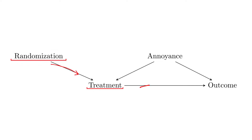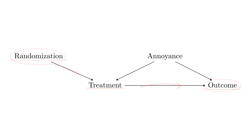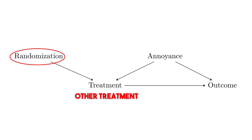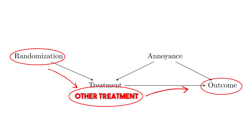For this to work, there needs to be nothing else going on between the randomization and the outcome — no back doors between randomization and outcome, or we need to be able to control and close them. Additionally, randomization cannot cause anything else, because if it does, when we isolate the part of treatment determined by randomization, we'll also pick up that other treatment. So it's stronger than just saying no back doors: there also can't be any front doors from the instrument to the outcome except through the treatment.